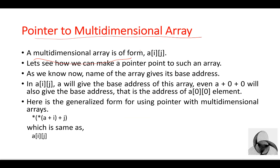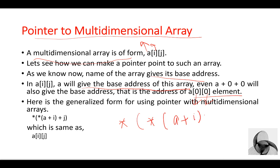Next is pointer to multidimensional array. Multidimensional arrays include 2D and 3D arrays. In a 2D array, data is stored in rows and columns, where i is the row index and j is the column index. The name of the array gives its base address. `a` gives the base address, and `*(*(a + i) + j)` is the generalized form for using a pointer with a multidimensional array, which is equivalent to `a[i][j]`.